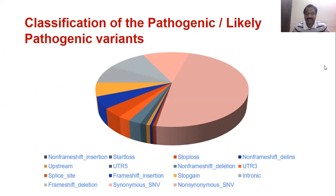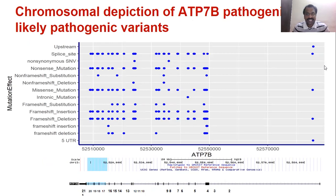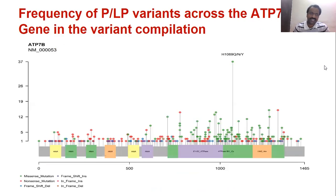We then tried to map these mutations in the ATP7B gene to see if any particular exons carry a higher number of mutations. We found that the majority of mutations are clustered in particular exons. The mutations are also predominantly concentrated in the copper binding domain as well as the ATPase domain.